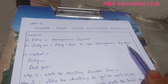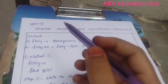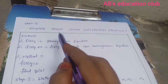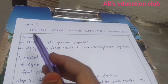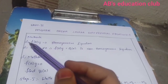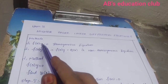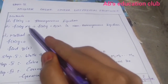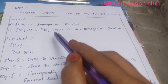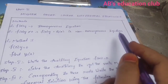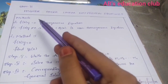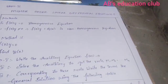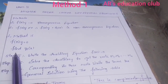Hi friends, welcome to our channel. Today we discuss first semester mathematics, Unit 3: Higher Order Linear Differential Equations. There are two equation types: f(D)y = 0, which is a homogeneous equation, and f(D)y = Q(x), which is a non-homogeneous equation. For the homogeneous case f(D)y = 0, we need to find the complementary function yc(x).